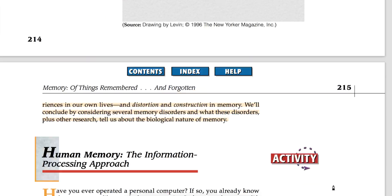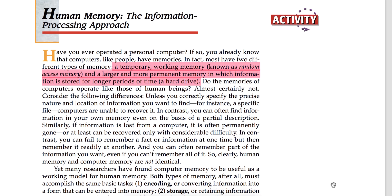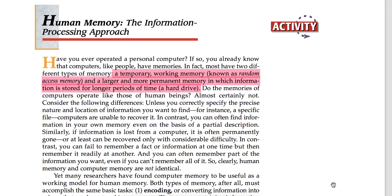First of all, we have the information processing model. The most basic model is the information processing model. We try to understand that the memory process works similarly to a computer. People who work with computers know there is a Random Access Memory (RAM), which is temporary — when power is lost, everything is lost. There is also a temporary memory or working memory, which is the RAM.